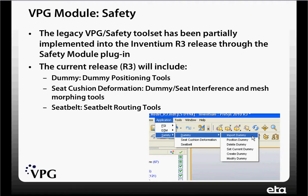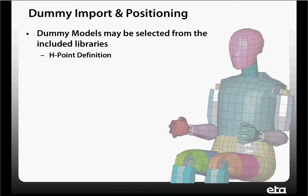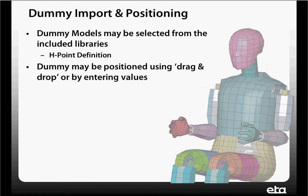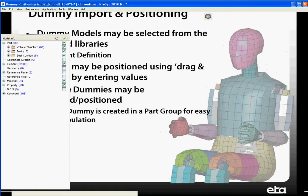This R3 release currently includes dummy positioning tools, seat cushion deformation tools where we can identify the dummy and seat interference, and mesh morphing tools for that. Also seat belt routing tools. The dummy import and positioning has some unique tools that allow users to import dummy models and define each point for those dummies. Once we put those dummies in the model, we can position them using a drag and drop feature or by entering values into the user interface. We can also support multiple dummies, and each dummy is created using a part group for easy manipulation.